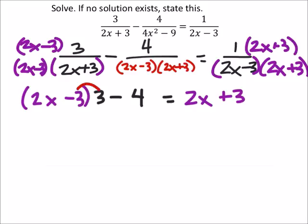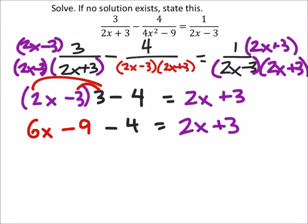So, from here, I'm going to distribute that 3 into the purple parentheses, which would give us 6x minus 9. And this is minus 4 equals the 2x plus 3. And, again, this is just going back to regular problem-solving strategies. So, I'm going to subtract 2x from both sides. Now, if you wanted the x's on the right, you could as well.